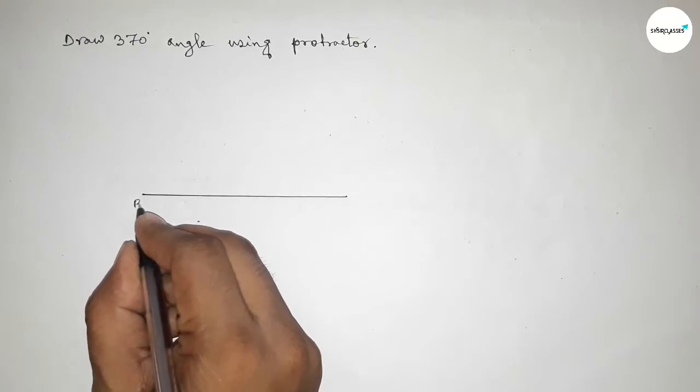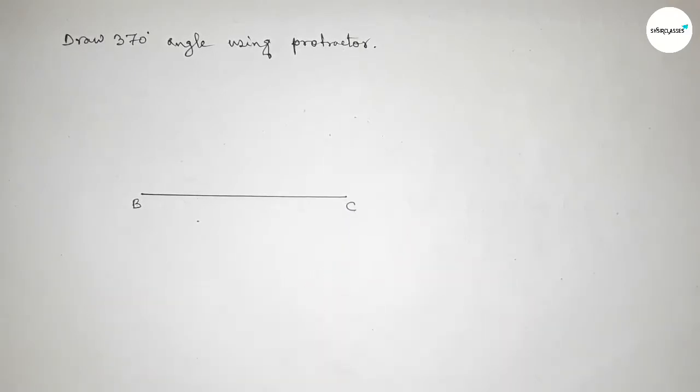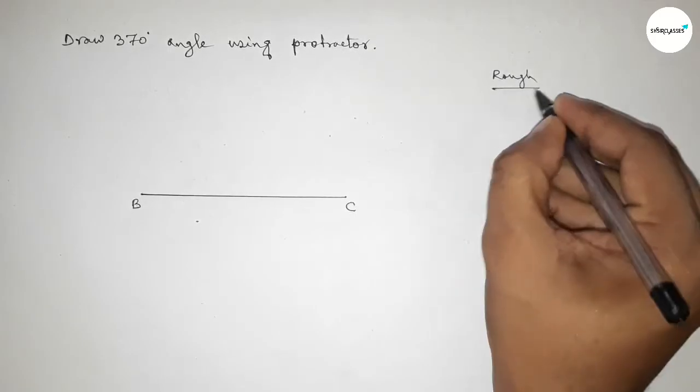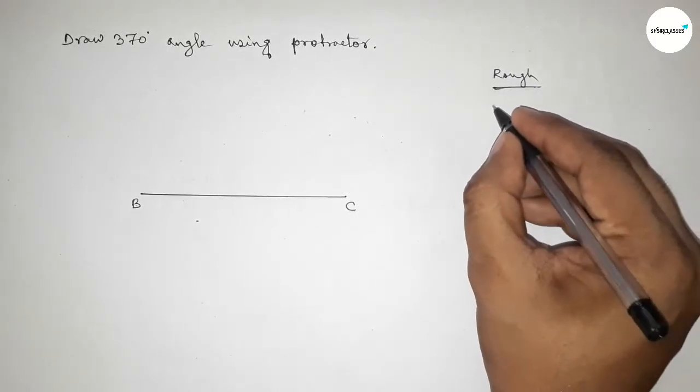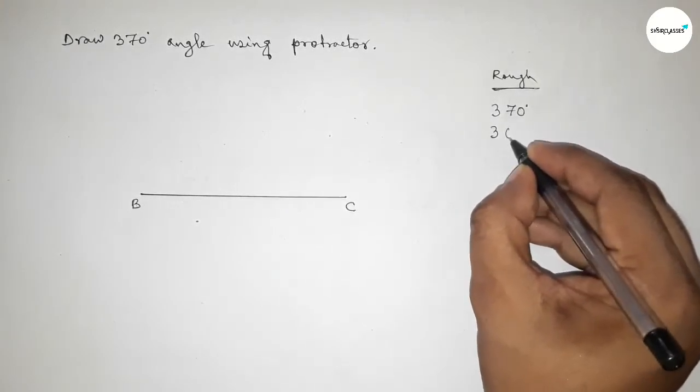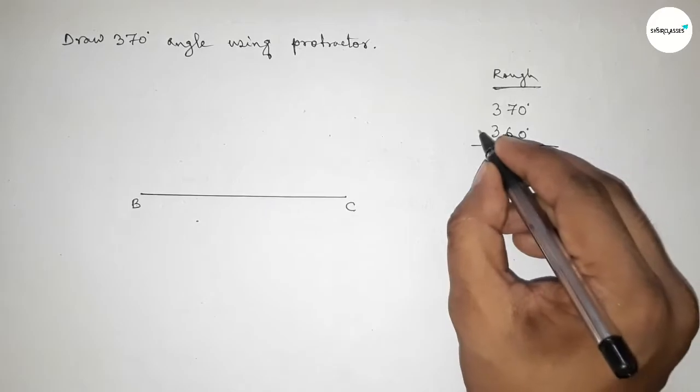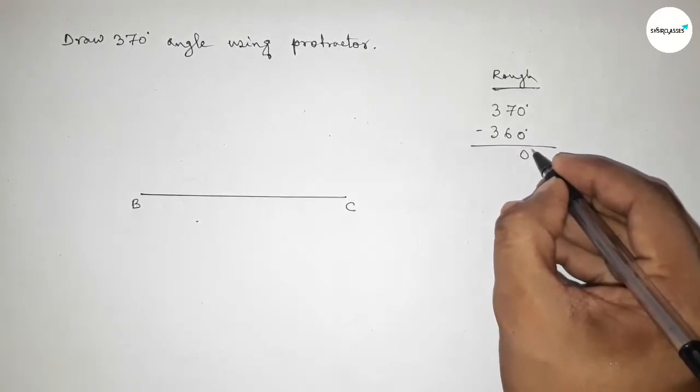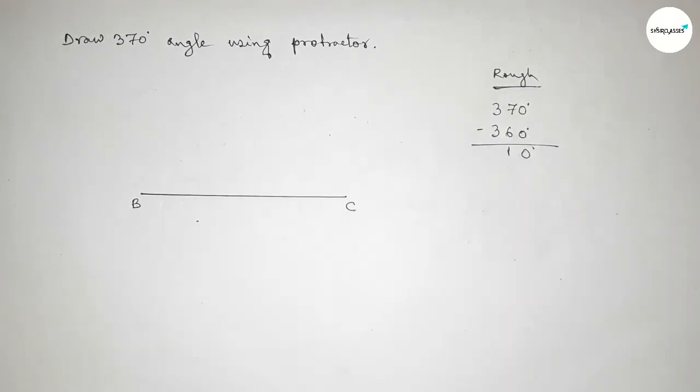Taking point B here and C here. Now discussing some calculations: if we subtract 360 degrees from 370 degrees, we get 10 degrees. So this is 0, and here 1, and this is 0, so 10 degrees.